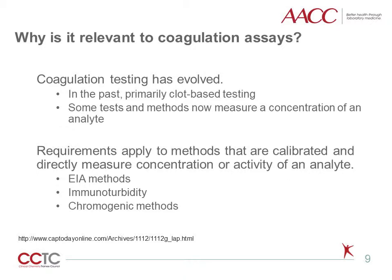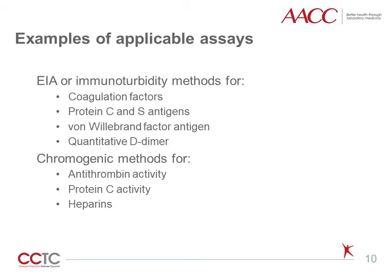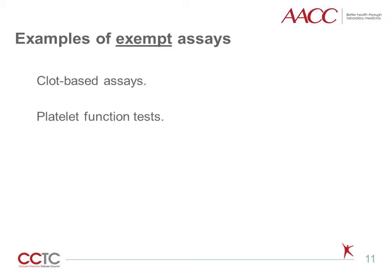These concepts are familiar to many laboratorians in clinical chemistry, but are newly applied to other areas of laboratory medicine such as thrombosis and hemostasis testing. In the past, coagulation testing was primarily clot-based testing using instruments that were not calibrated to measure the concentration of an analyte. Methodology has evolved, and many coagulation laboratories now use methods which may be calibrated and measure a concentration of an analyte. Hence, the requirements for calibration verification now apply in the coagulation laboratory. Examples of applicable methods include EIA methods, immunoturbidity methods, and chromogenic methods.